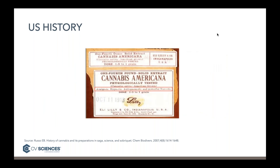This is a label of a product produced by Eli Lilly. The date is October 11th, 1913, and this drug product is called cannabis americana — cannabis sativa American grown. On the label you can see it says analgesic, meaning pain-reducing; hypnotic, meaning sleep-promoting; anti-spasmodic, meaning muscle-spasm reducing; and narcotic, meaning sleep-promoting, pain-reducing, and euphoria-producing.